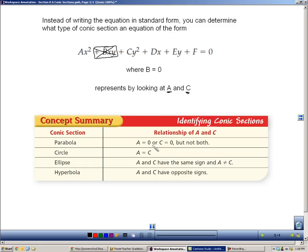If the A or the C is 0, not both of them, but if one of them, then you know it's going to be a parabola. If the A equals the C, you know it's going to be a circle. If the A and the C have the same sign but are not equal, it'll be an ellipse. And if the A and C have opposite signs, it'll be a hyperbola.